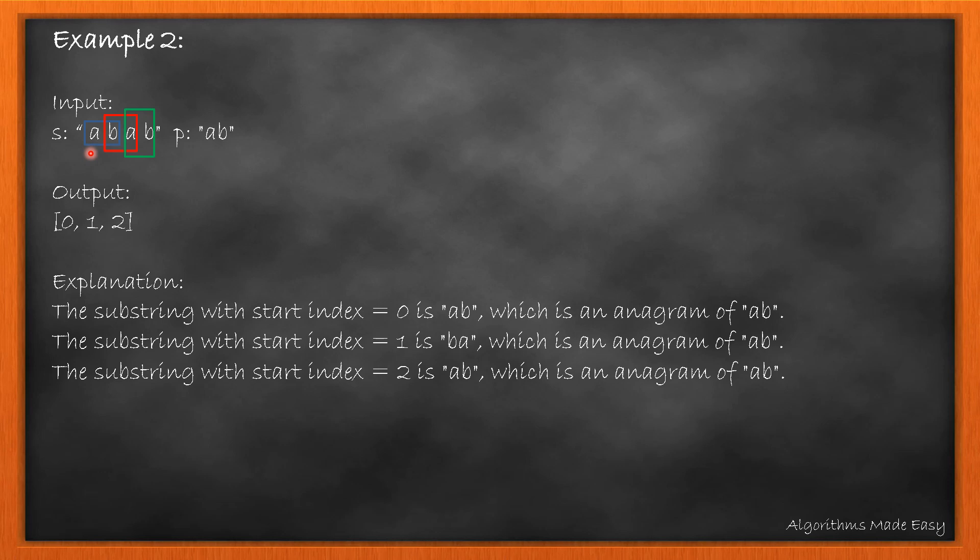For example 2, we can see that AB, BA, and AB are the three anagrams starting from indexes 0, 1, and 2. So we return them.